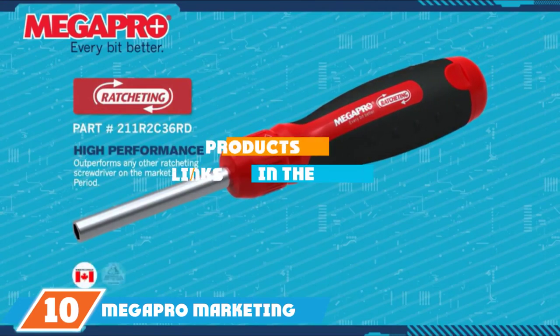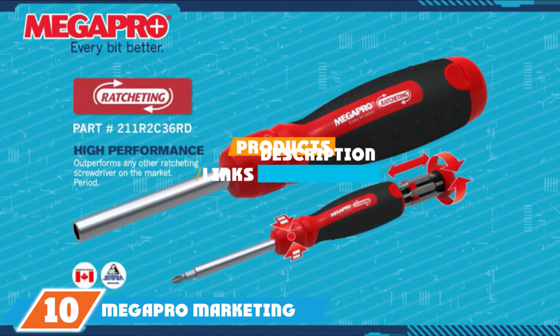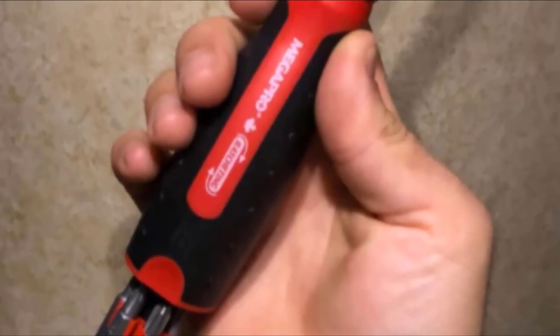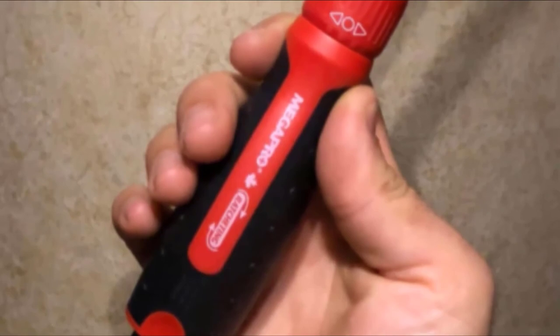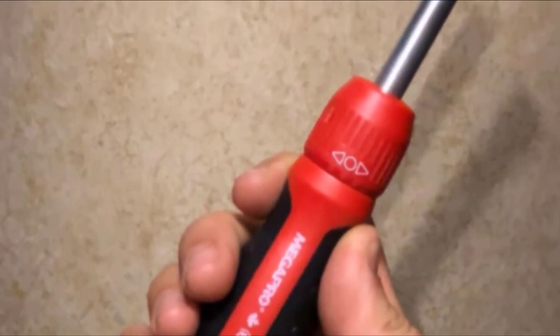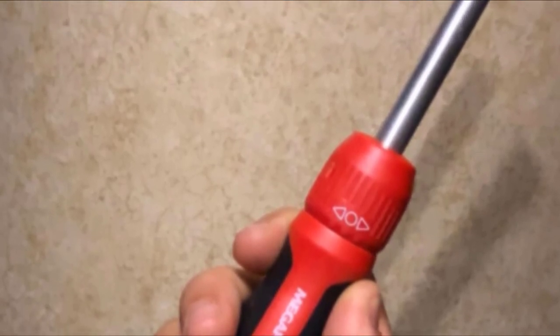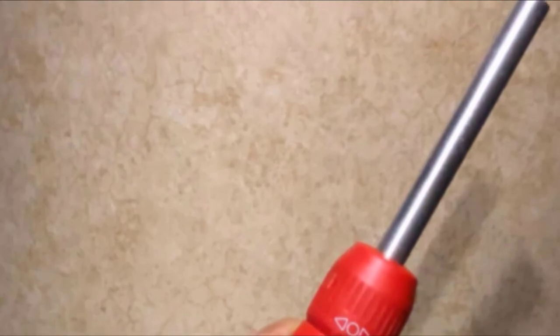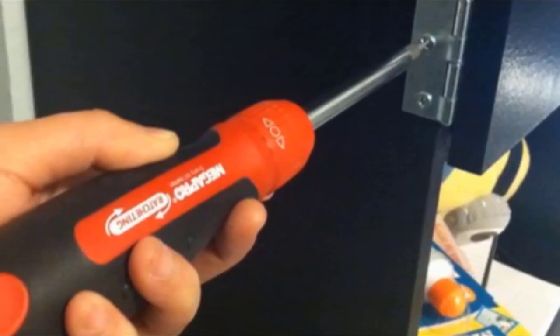Finally, the number 10 position we have MegaPro Marketing USA NC Ratcheting Screwdriver. Our final pick for today is the MegaPro Marketing USA NC Ratcheting Screwdriver which makes bit retrieval a breeze thanks to its patented pull-out system for easy access and increased productivity. The 13 bits are easily replaceable which increases longevity and saves you money on brand new tools in the long run.